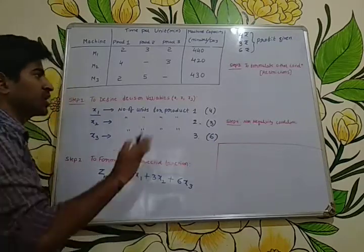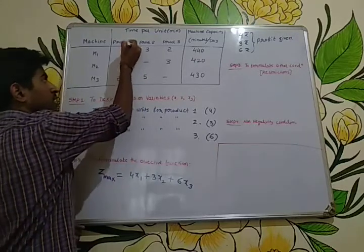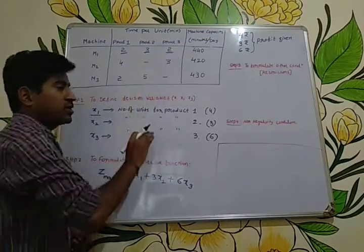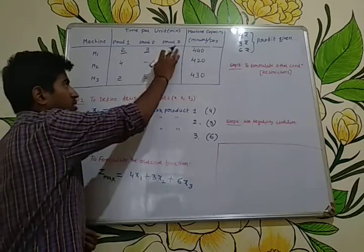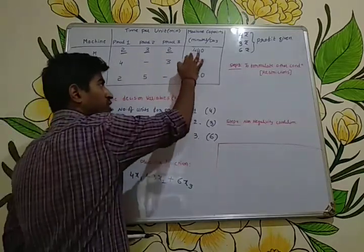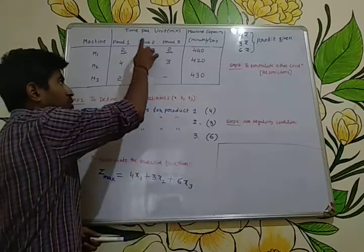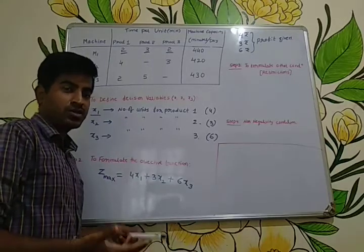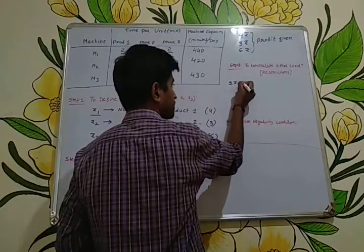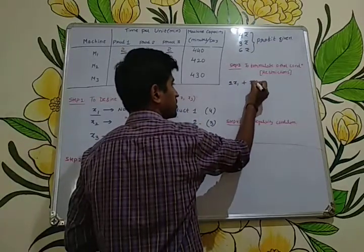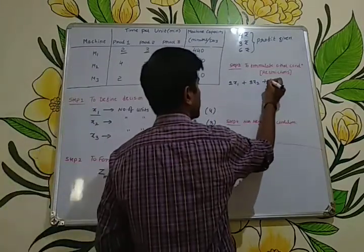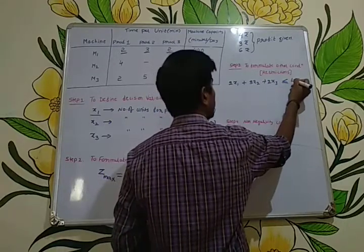Product 1 requires 2 minutes on M1, product 2 requires 3 minutes, and product 3 requires 2 minutes. In manufacturing one set of the three products we require 2 + 3 + 2 = 7 minutes. Within 440 minutes, we need to determine how many quantities of products 1, 2, and 3 we can manufacture. So the constraint for machine M1 is: 2x1 + 3x2 + 2x3 ≤ 440 minutes.